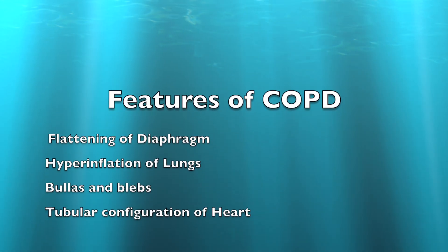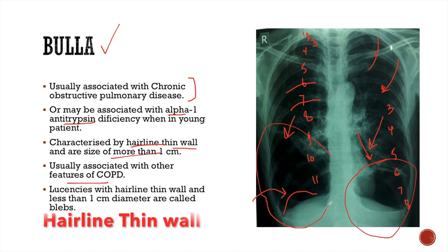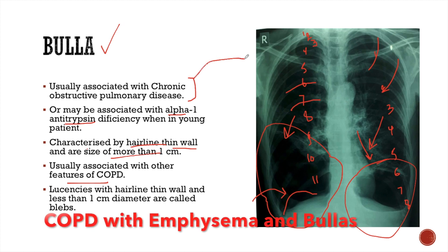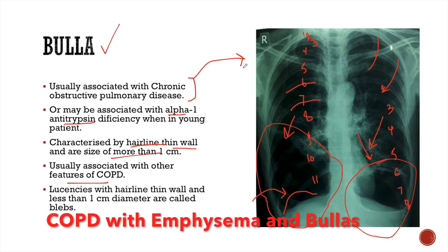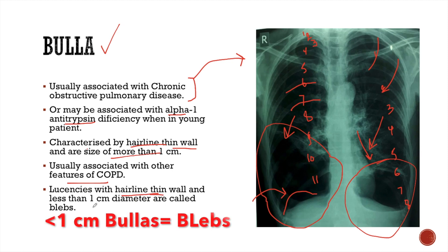These are all features of chronic obstructive pulmonary disease. In this X-ray, we can also see lucent areas in both lower zones, and both these lucent areas have hairline thin walls — so these are pulmonary bullas. This patient has chronic obstructive pulmonary disease with emphysematous lungs and multiple bullas. When similar lucent areas with hairline thin walls are sized less than 1 cm, they are known as blebs.